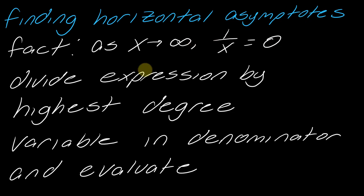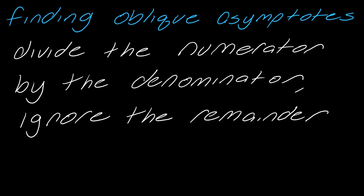The trick is to divide the expression by the highest degree variable in the denominator and then evaluate. This is a pretty simple exercise and you'll use it again in calculus. To find oblique asymptotes, you divide the numerator by the denominator and ignore the remainder. I'm much more of an example person, so let's jump right into it.